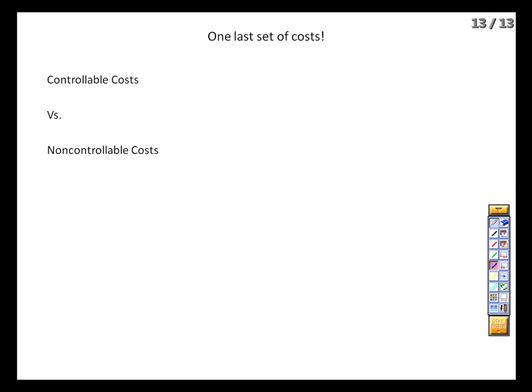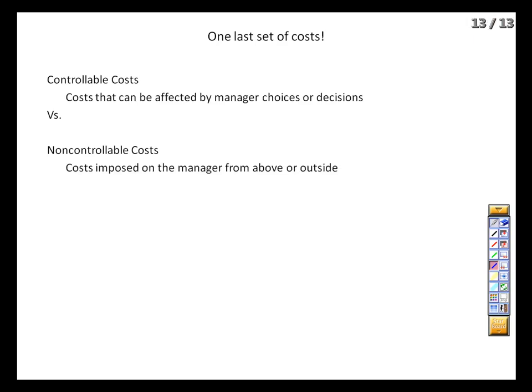One more set of costs in Chapter 10 before we move on — more related to performance evaluation than production cost tracking. Controllable versus uncontrollable costs: costs that a manager has the ability to influence versus costs imposed on the manager from outside. If we want to make good judgments about performance measurement and have our employees feel good about the process, we have to make sure we're only judging them based on items they can specifically control.